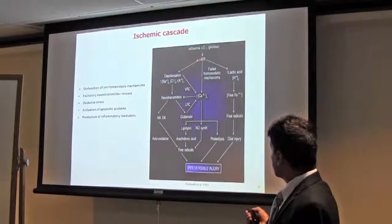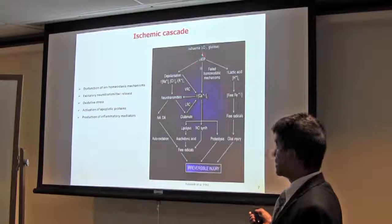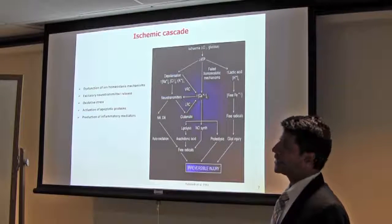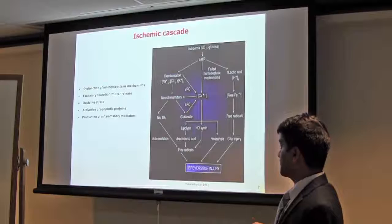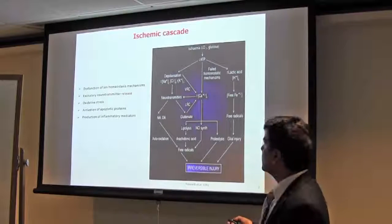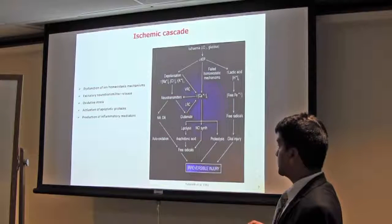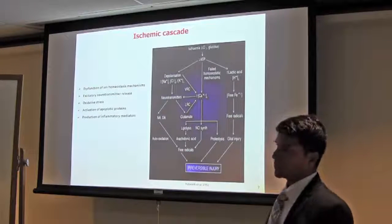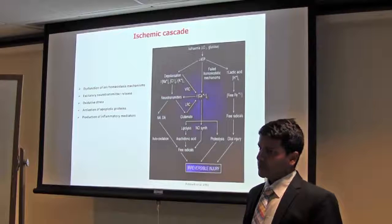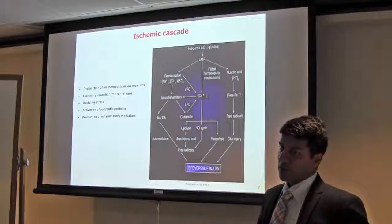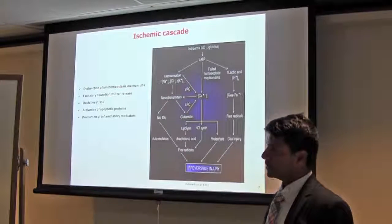When stroke happens, immediately there is reduction of energy, and many detrimental cascades start, like dysfunction of ionic homeostasis mechanism, excitotoxicity, oxidative stress, inflammation, and apoptotic cell death.